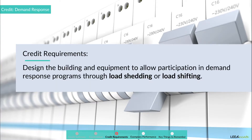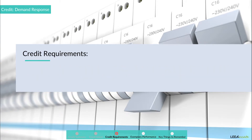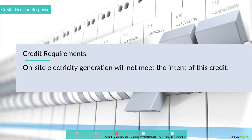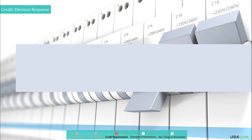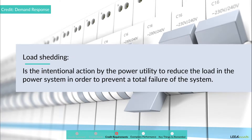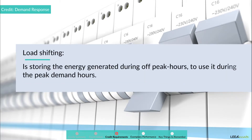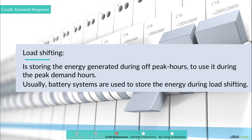The intent of this credit is to encourage project teams to design the building and equipment to allow participation in demand response programs through load shedding or load shifting. On-site electricity generation will not meet the intent of this credit. Load shedding is the intentional action by the power utility to reduce the load in the power system in order to prevent a total failure of the system. Load shifting is storing the energy generated during off-peak hours to use it during peak demand hours. Usually, battery systems are used to store energy during load shifting.